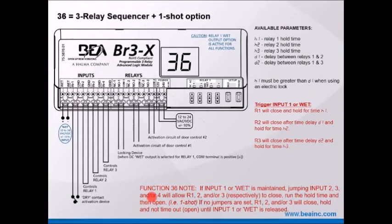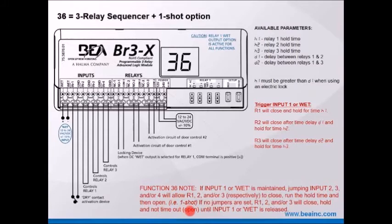If input one or the wet input is maintained, jumping input two, three, and/or four will allow R1, R2, and/or R3 respectively to close, run the hold time, and then open or reverse — that is the one-shot function. If no jumpers are set, then R1, R2, and R3 will close and hold and not timeout until input one or the wet input is released, just like function 35 on the BR3. The jumpers are the key indicator to perform the one-shot function.